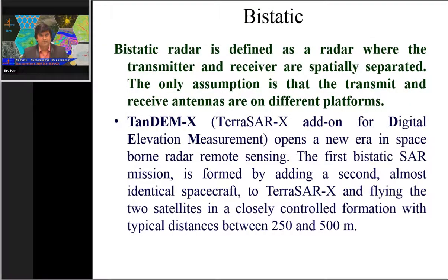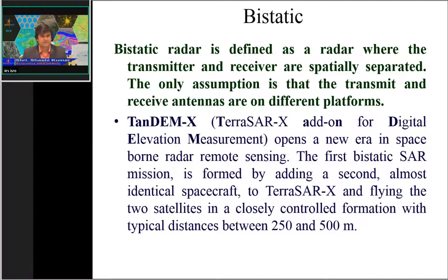In a bistatic radar or bistatic synthetic aperture radar system, there is one transmitter and one receiver. In bistatic systems, the transmitter and receiver are placed at separate locations. The transmitter transmits electromagnetic pulses, and the receiver, placed at some distance, receives the electromagnetic signal after scattering from the earth object.